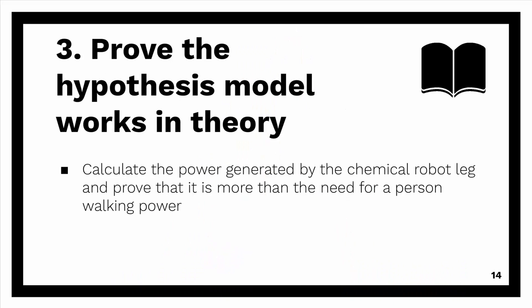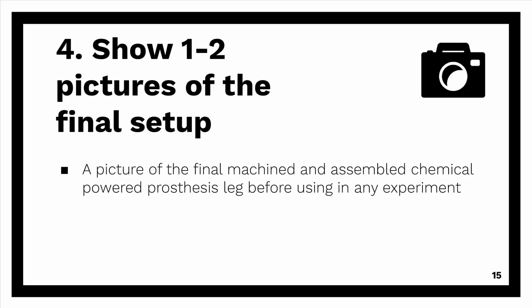The next step is to prove the hypothesis model works in theory. What I did was calculate the power generated by the chemical robotic leg, and then prove that it is more than the power needed by a person for walking. The next step is one to two pictures of the field setup. In my case, I put a picture of the final machined and assembled chemical powered prosthesis leg, before using it in any experiment.